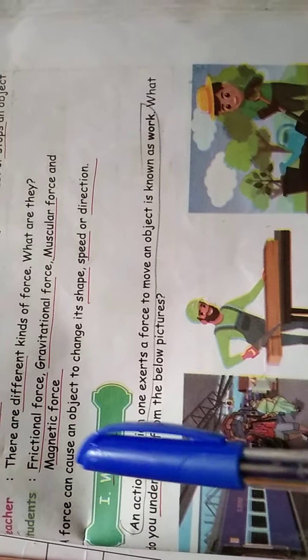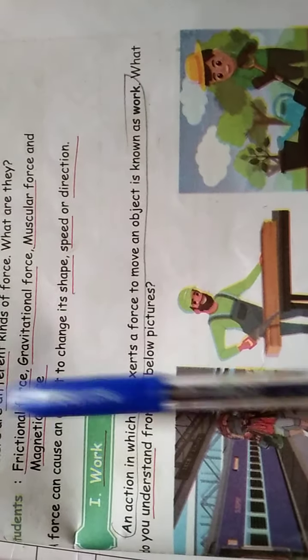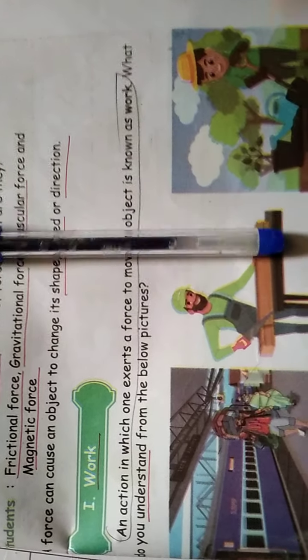In the first topic we saw that work is when an object moves from one place to another place using a force. The force is done on an object, so the object moves from one place to another — that is called work, done by the force. In the next class we will see some other points on this topic.